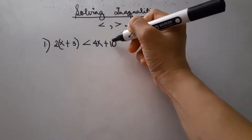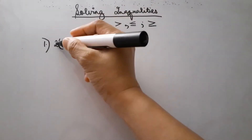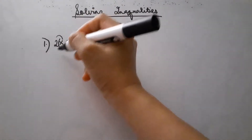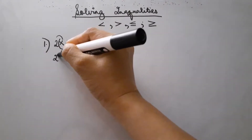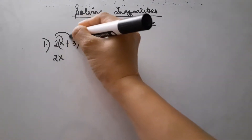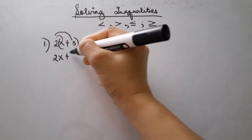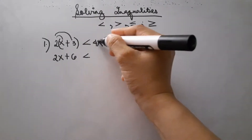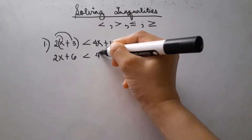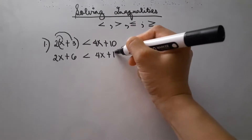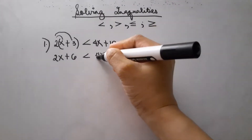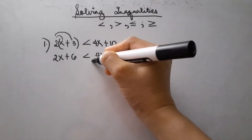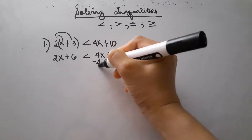Let's see. We have 2 times the quantity of x plus 3. We can distribute first — 2 times x is 2x, then 2 times 3 is 6. This is less than 4x plus 10.